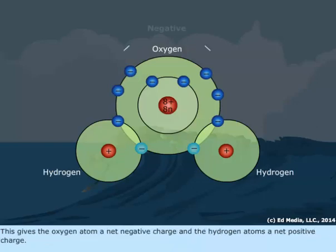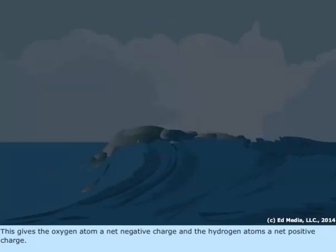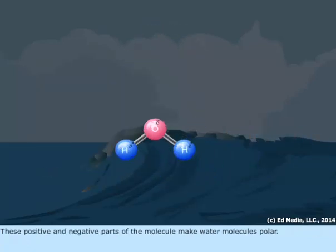This gives the oxygen atom a net negative charge and the hydrogen atoms a net positive charge. These positive and negative parts of the molecule make water molecules polar.